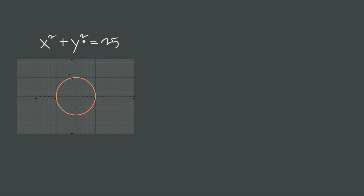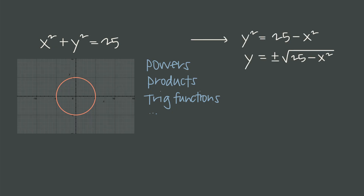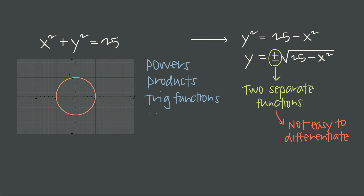The problem with finding the derivative of this equation is that y is buried inside a power function. Whenever we have y buried inside a power, product, or trig function, trying to solve the equation for y can break it into multiple functions, making it really difficult to find the derivative. So instead of solving for y, we'll use implicit differentiation on the original equation, which gives the derivative directly without trying to untangle y.